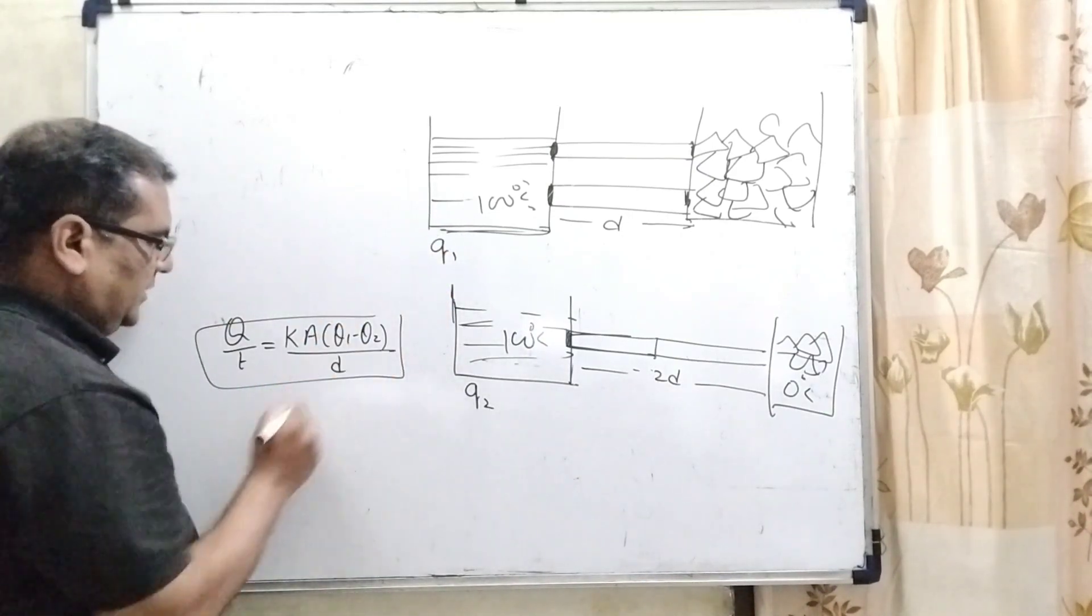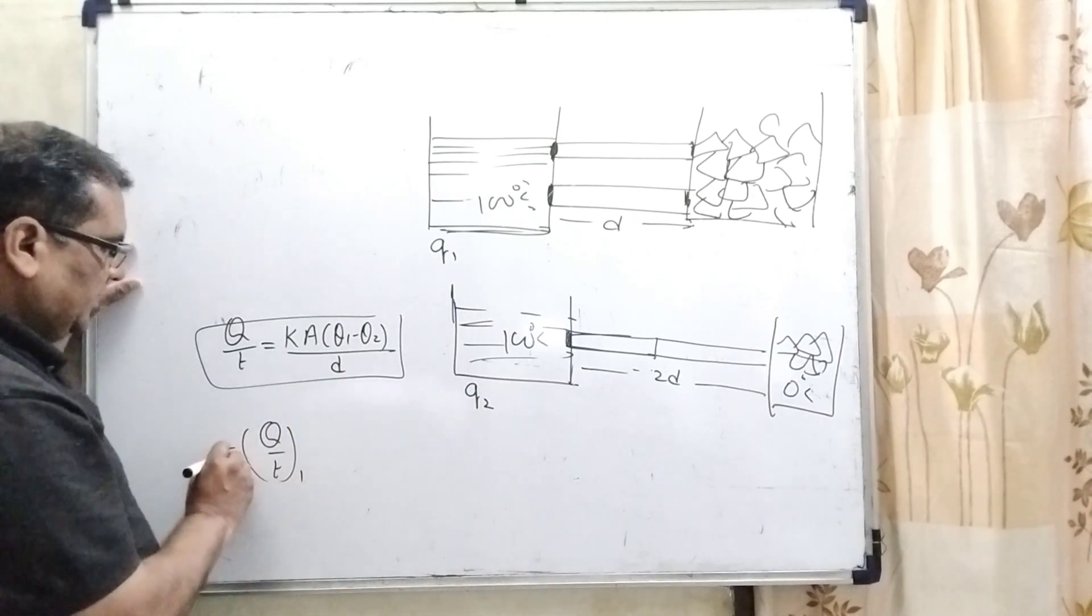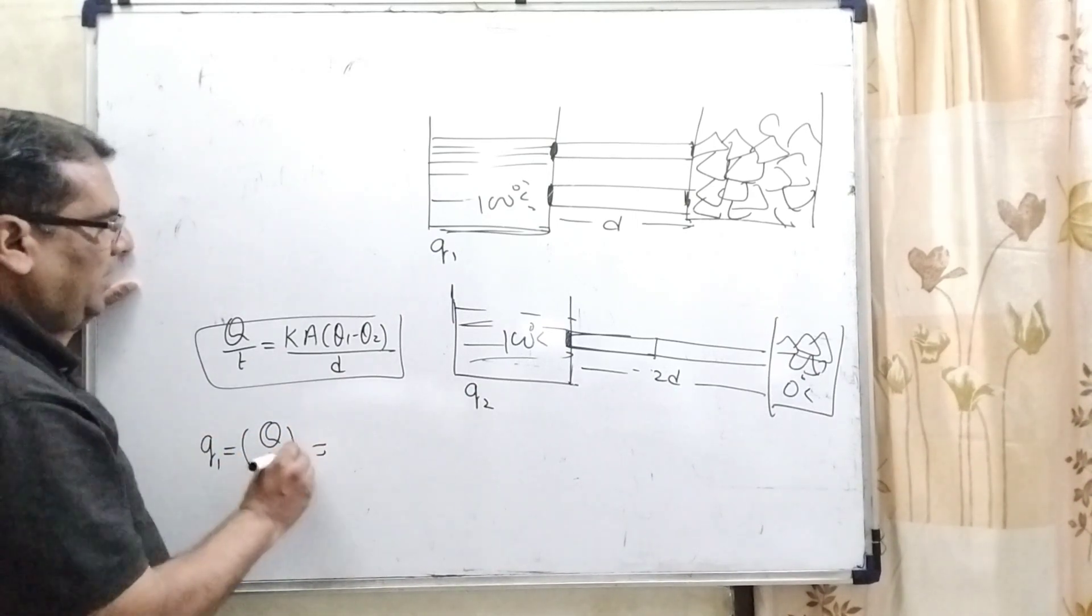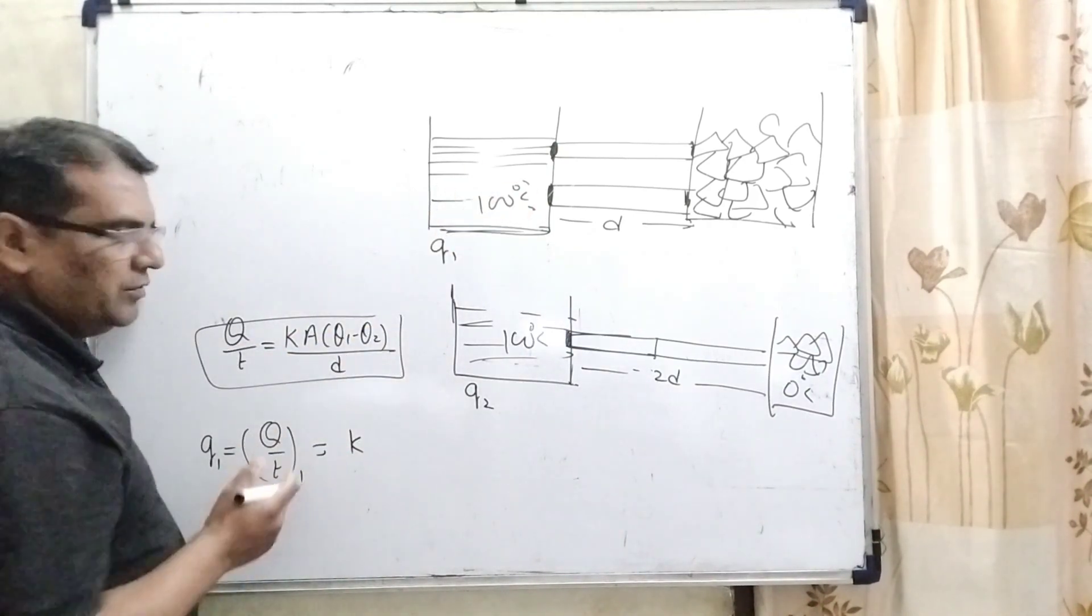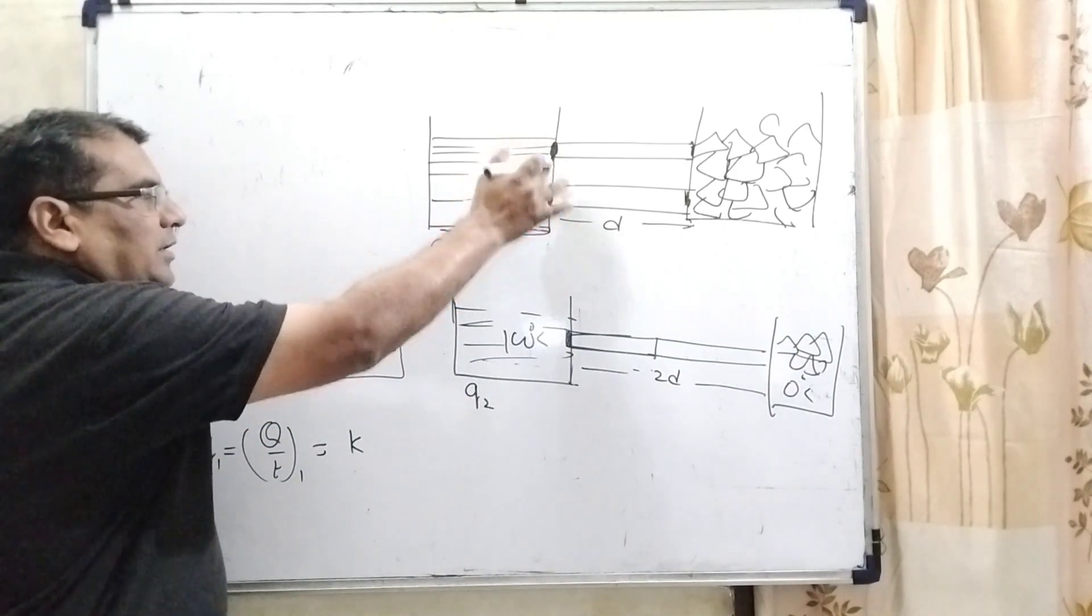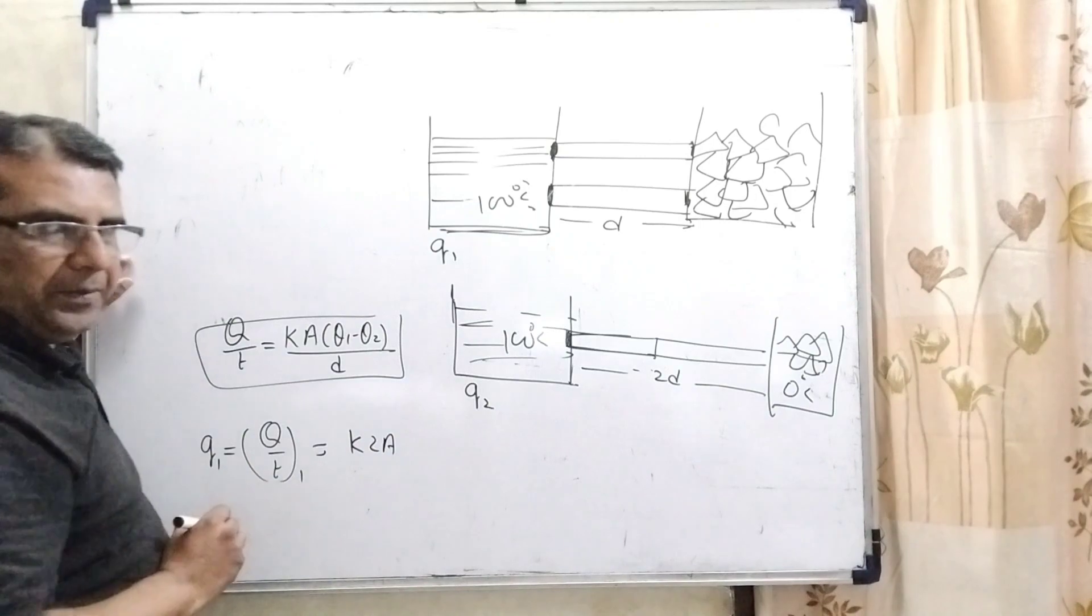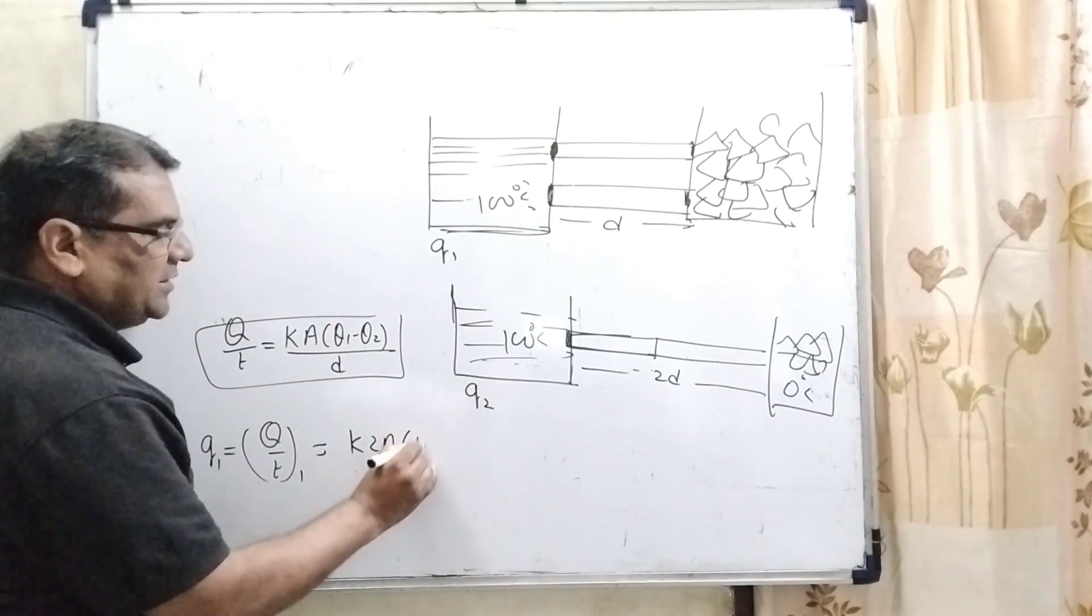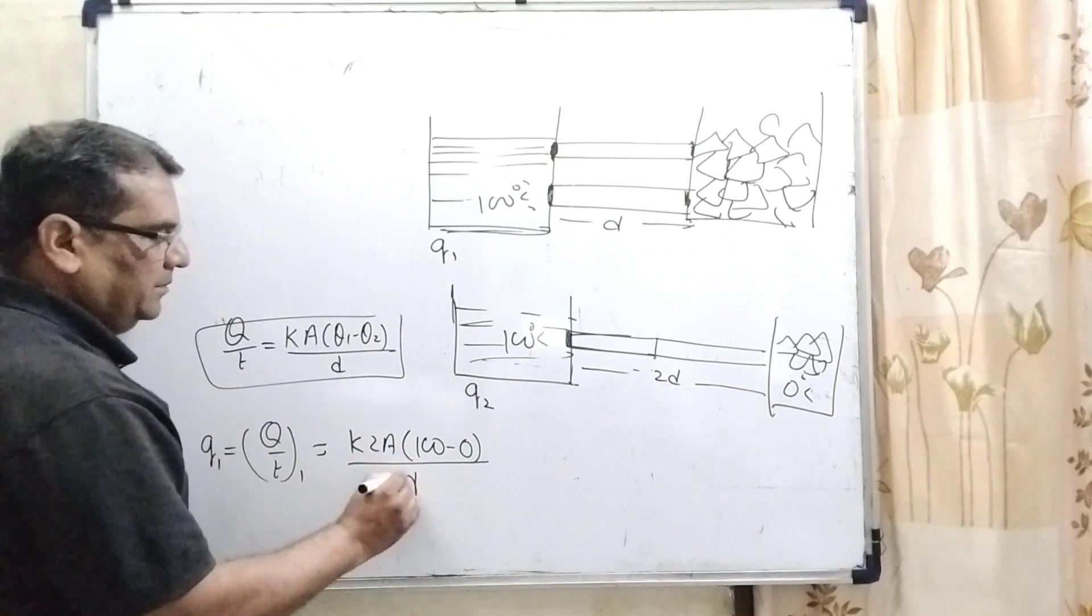In the first case, Q by T, this is first case, let us say Q1. Here K, same rod, identical rod, so we are using K. Here, area of contact becomes double, A plus A, so we have put here 2A. Higher temperature is 100, lower temperature is 0, and upon D.